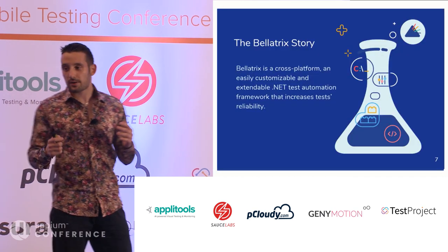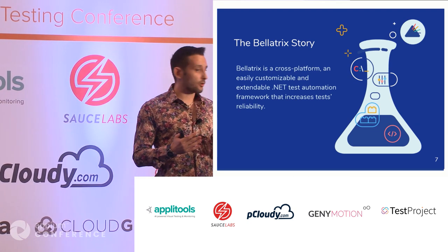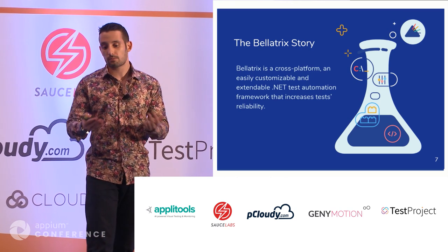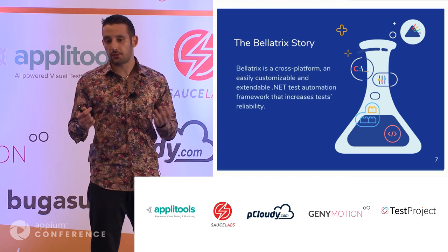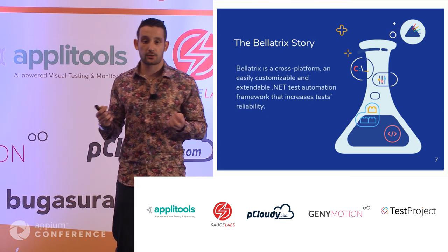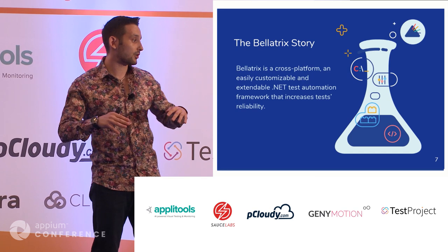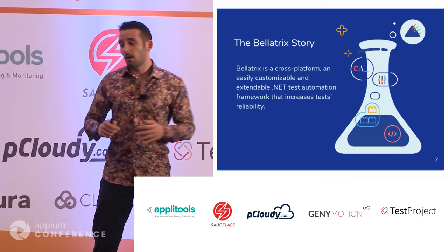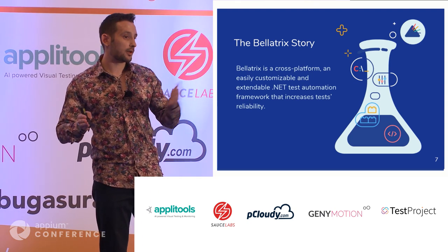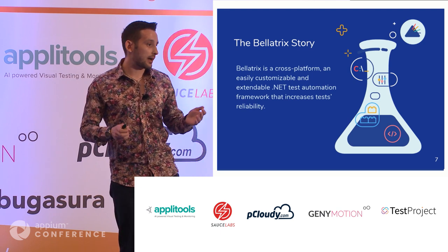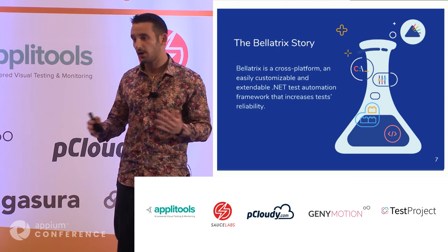As you know, one of the seven principles in testing is context. In order to understand what type of testing we do, I need to share what we do. We develop a test automation framework written in .NET in C#. We use .NET Core so it's cross-platform, meaning you can write and execute tests on Windows, Linux, and Mac. We have different modules for testing web, Android, iOS, desktop, API, and load testing. Underneath we use WebDriver, Appium, WinAppDriver, RestSharp, and so on.